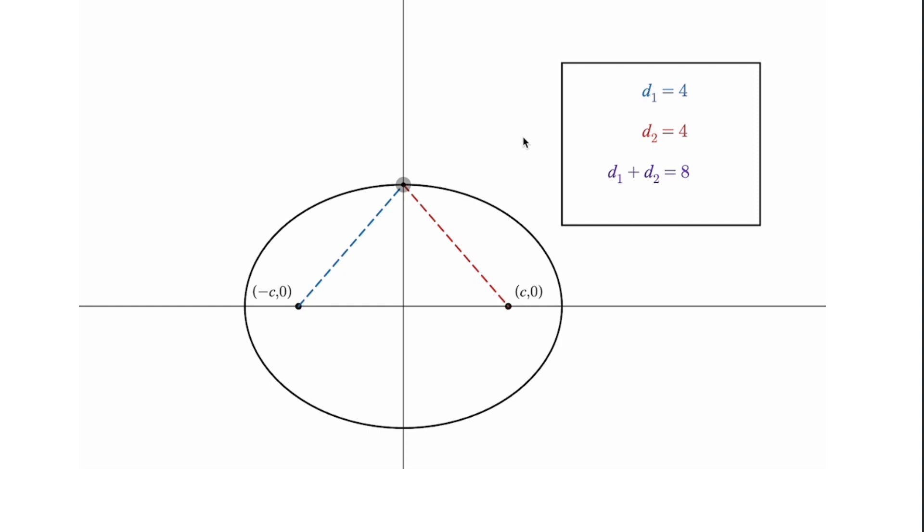So the key thing to remember is the ellipse, its shape is determined by where the sum of the distances between the foci and a point are equal. And again, here you go, the sum of the distance here which shows to be 8, and that creates an ellipse.